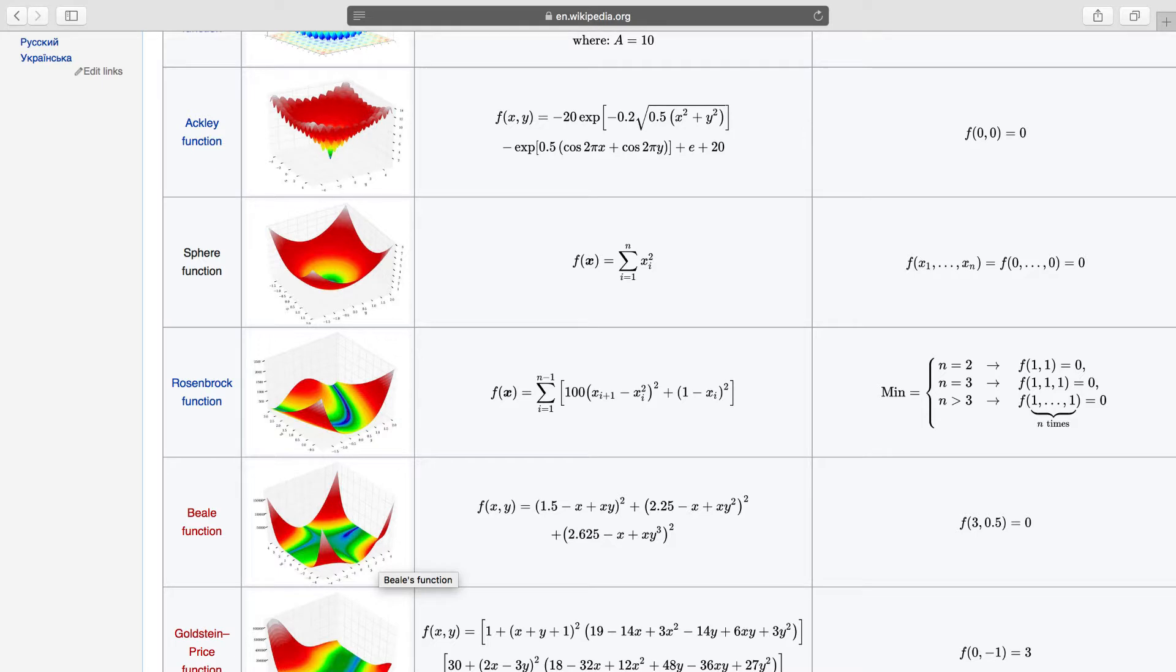However, the Rosenbrock function is a little more complicated. In this function, the optimum answer is obtained when all of the x amounts become one. In addition, the number of input variables must be equal or bigger than two. Similar to the sphere function, the minimum answer is zero.